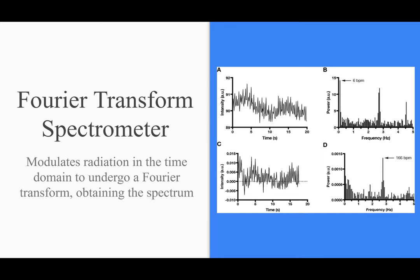What this device does is it modulates radiation in the time domain to undergo a Fourier transform, obtaining a spectrum. So in simpler terms, we take the signal in a time domain—the raw data from the signal—and this device does a Fourier transform on that so that we can more easily read the signal and make distinctions about the resonant frequency.